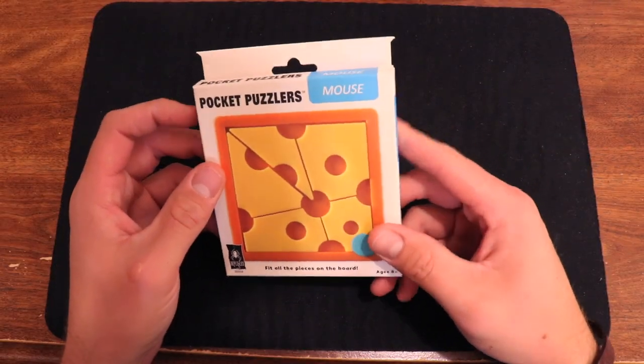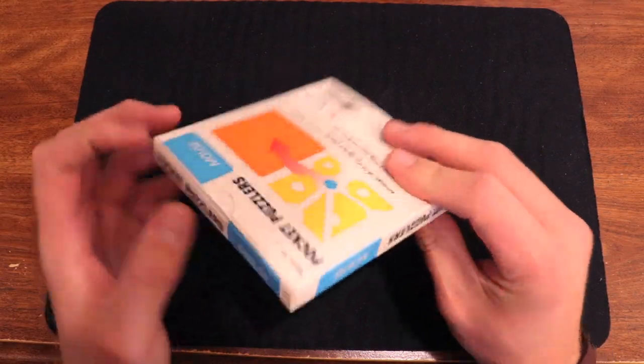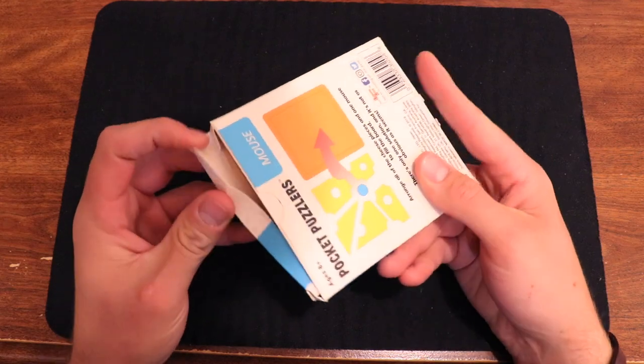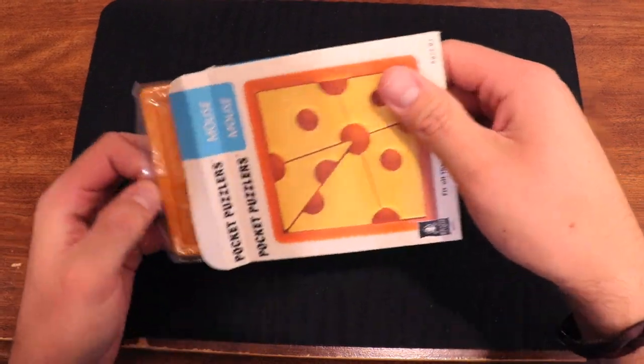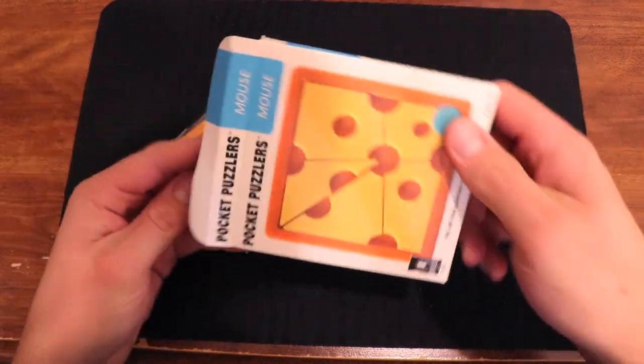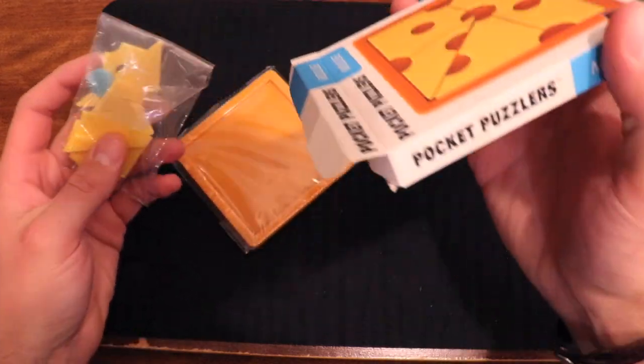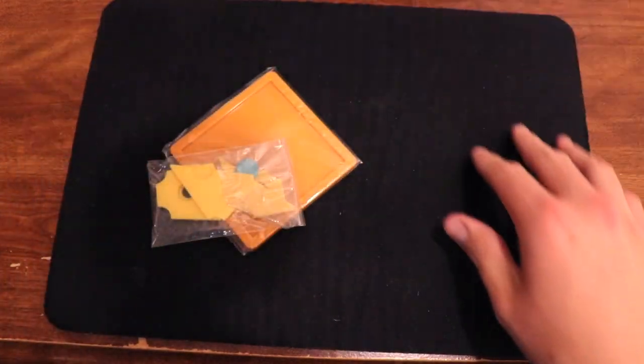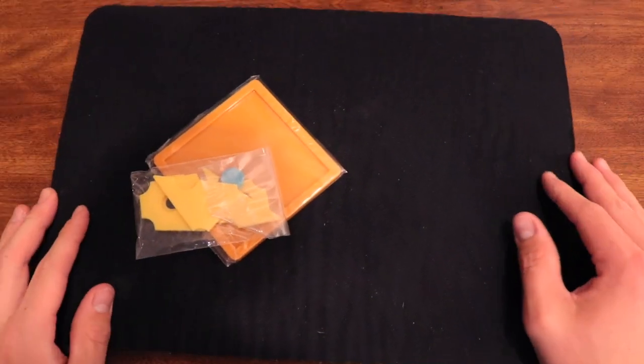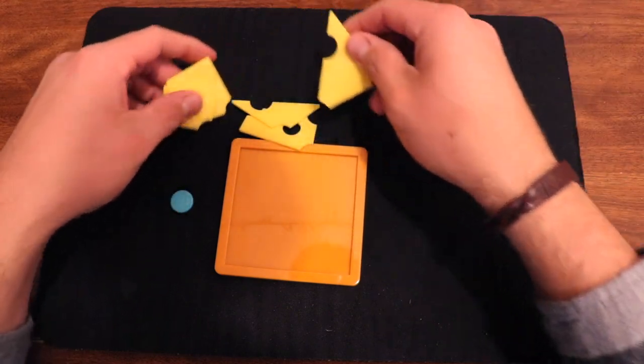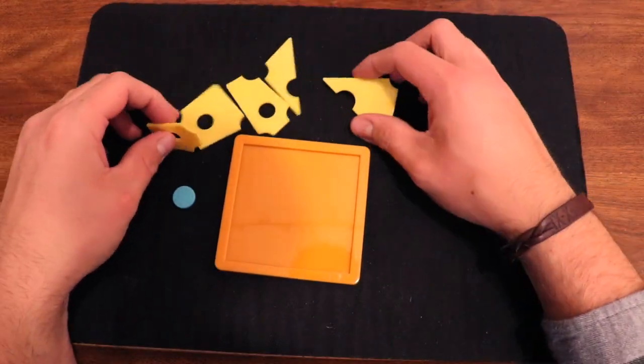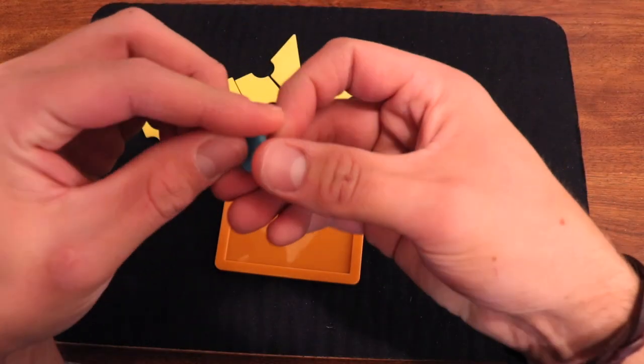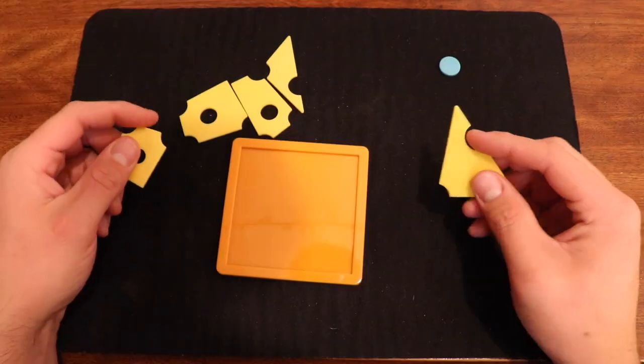All right, so the Mouse Cheese Pocket Puzzler. Let's see what this guy looks like. You got your board, cheese pieces, looks like about it. No solution which is good because we don't like those. All right, well there it is, so we got five cheese pieces and our tiny little mouse.